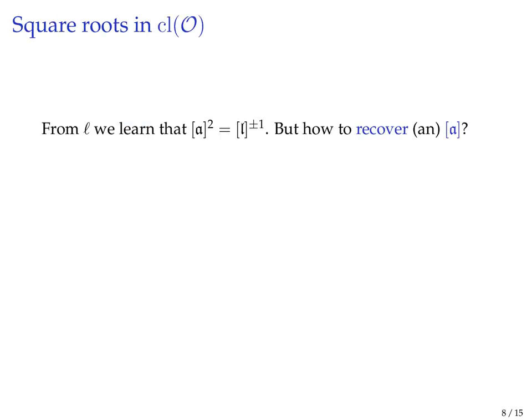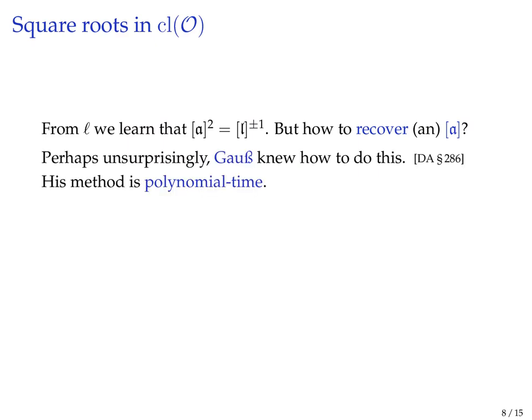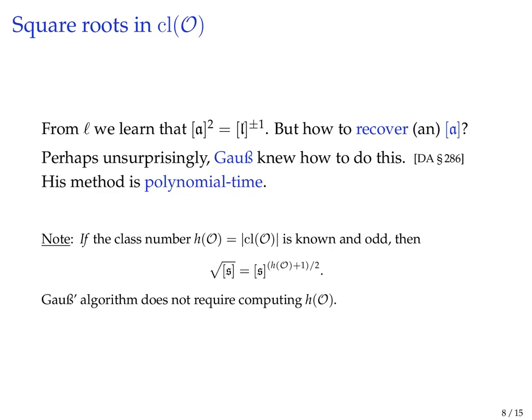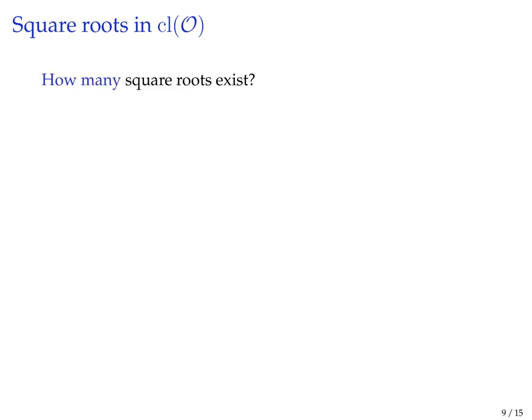The first problem on the list is how to compute square roots in the class group. The good news is that first of all, Gauss knew how to do this 222 years ago, and it turns out that his method from back then is actually polynomial time. If you happen to know the class number of this ring and it's odd, then of course there's an easier way like in any group, but computing the class number takes sub-exponential time, so this is much less efficient in general.